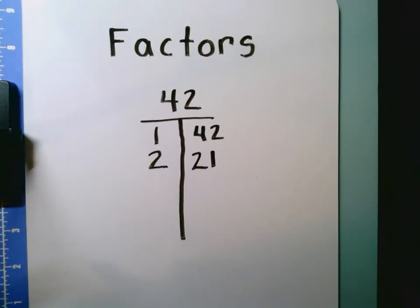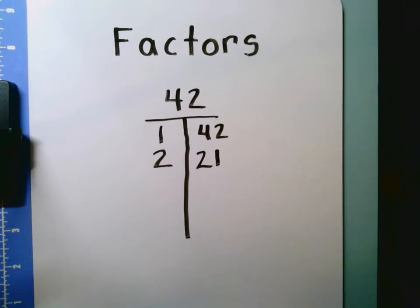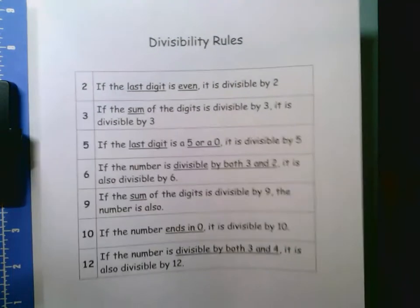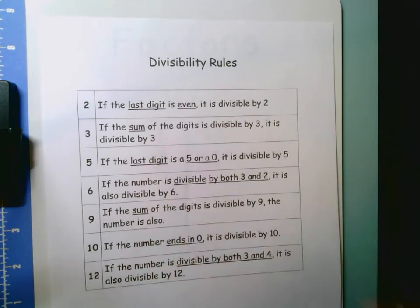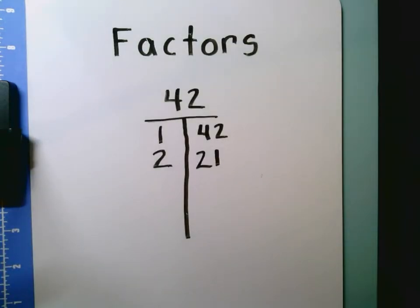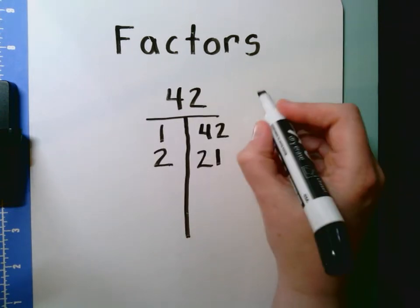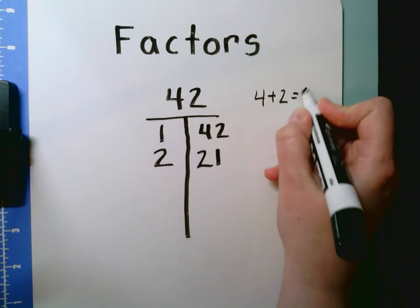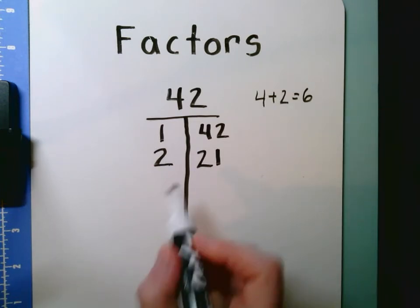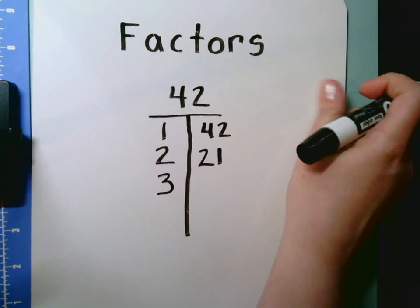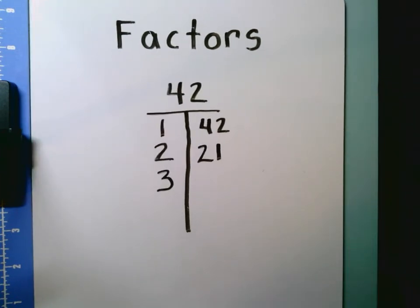The next number on my number line is 3. If I use my divisibility rules, I know that if the sum of the digits is divisible by 3, that number is divisible by 3. So let's look at the digits of 42: 4 and 2. 4 plus 2 equals 6. 6 is divisible by 3 because when I count by 3, I go 3, 6, 9 — I've hit 6. 6 is a multiple of 3, so 3 is also a factor of 42.